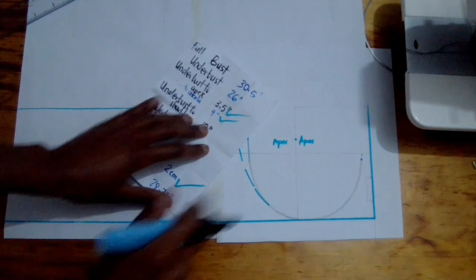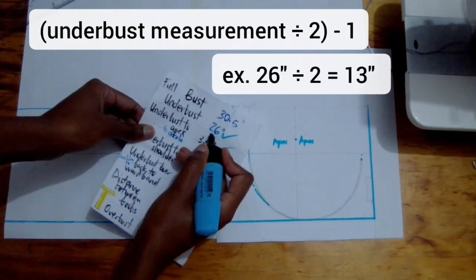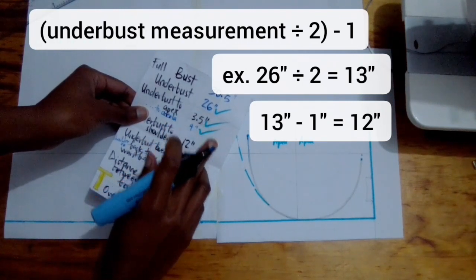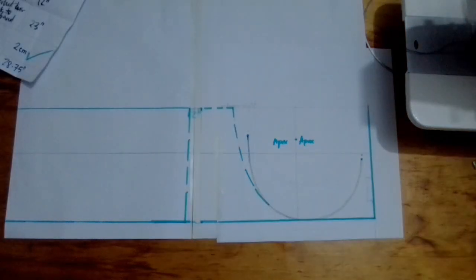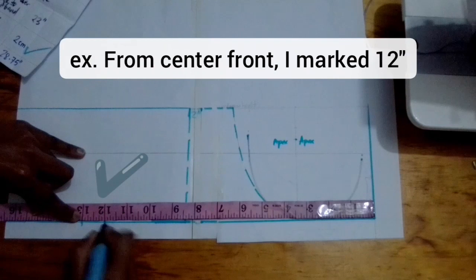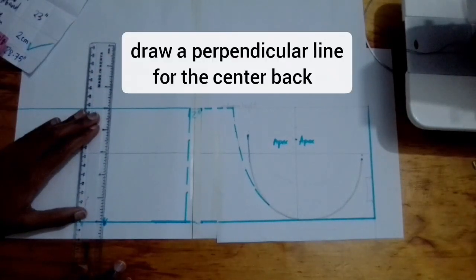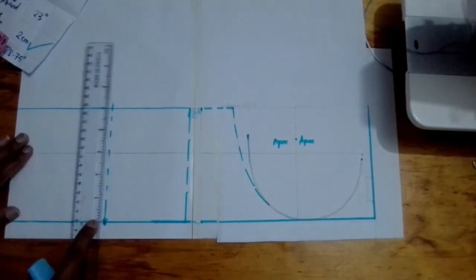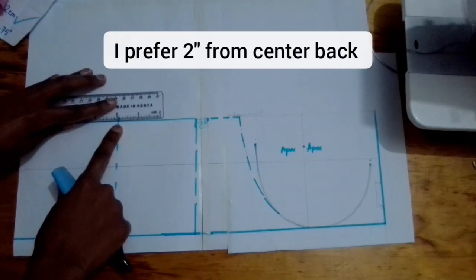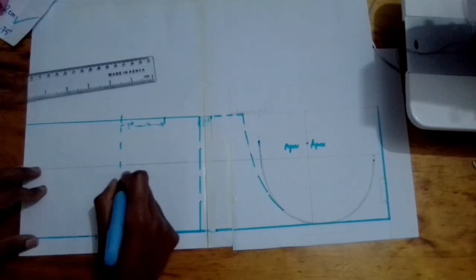Now I'm going to go in and find my under bust measurement, which is 26 inches. You're going to divide by two because this is half a sports bra. That gives me 13 inches. I'm going to subtract one inch from that because you use stretch fabric. So from the center front to this point, we're going to reduce this by one inch to 12 inches. So this is my center back. I'm going to draw a line that's perpendicular.